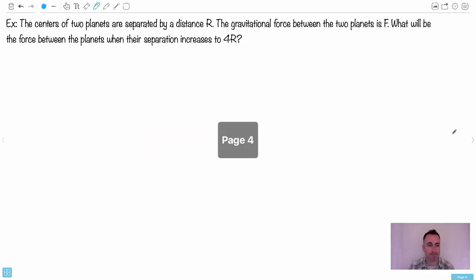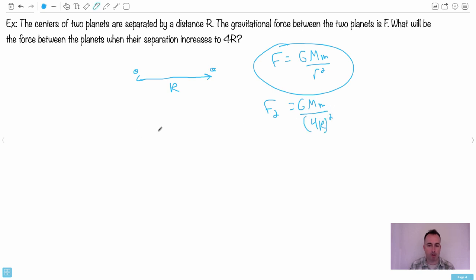Let's do another example quickly. We have the center of two planets separated by a distance R. So we have a planet and a planet and a distance R between them. The gravitational force between the two planets is F. So I have F equals GMm over R squared. What will be the force between the two planets if their separation increases to 4R?